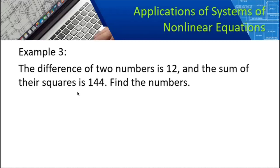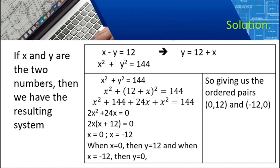Example number 3: The difference of two numbers is 12 and the sum of their squares is 144. Find the numbers. If X and Y are the two numbers, we form the system: X minus Y equals 12 for the first equation, and X squared plus Y squared equals 144 for the second. This is a system of non-linear equations since we have a linear and a circle equation.